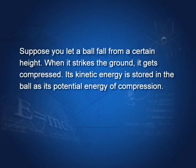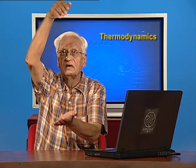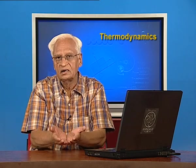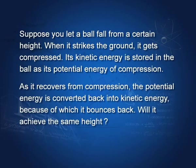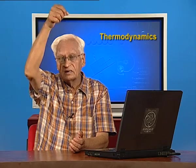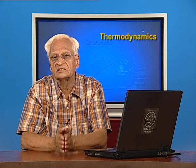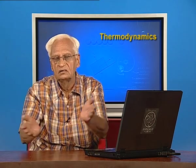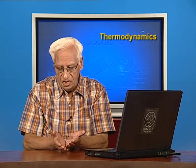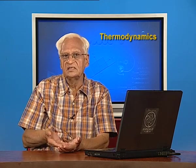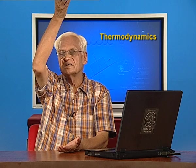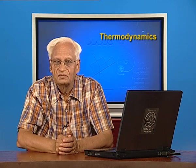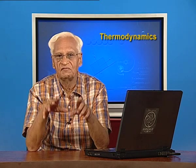Suppose you let a ball fall from a certain height. When the ball falls, it gets slightly compressed, changes shape, then recovers its shape, and the potential energy is converted into kinetic energy so it goes up. When it comes back down, it strikes the ground and loses some energy in the form of heat, sound, or light. Therefore, it never recovers the energy with which it fell, and it never rises to exactly the same height. We say that the process is irreversible.